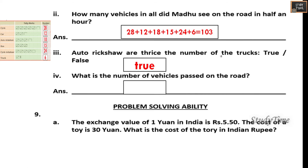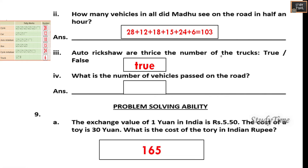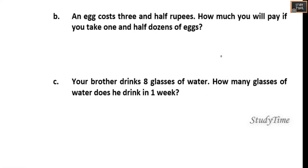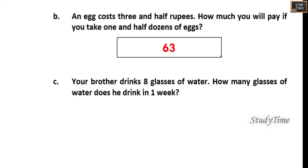The exchange value of 1 yuan in India is rupees 5.50. Cost of 30 yuan — you have to multiply 30 into 5.50. Next, an ice cream costs 3.5 rupees. How much will you pay if you take 1 and a half dozens? One dozen is 12 and one and a half dozen is 18, so multiply 3.50 into 18.